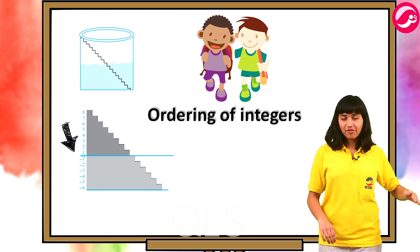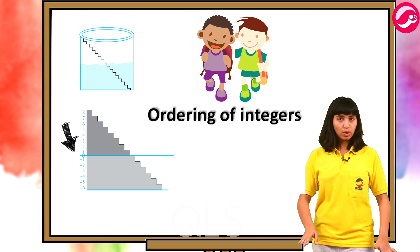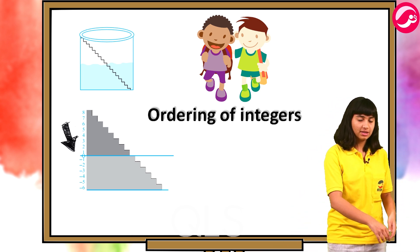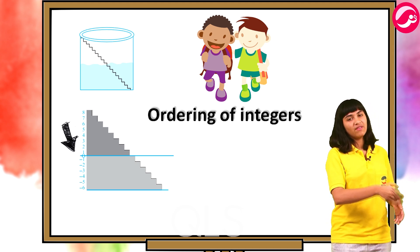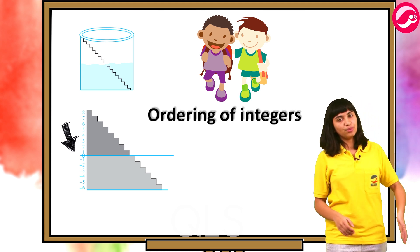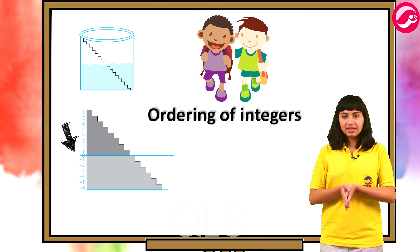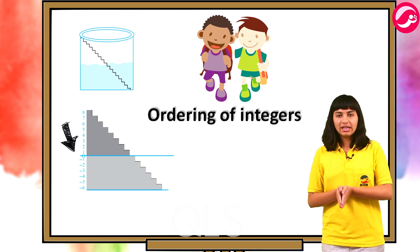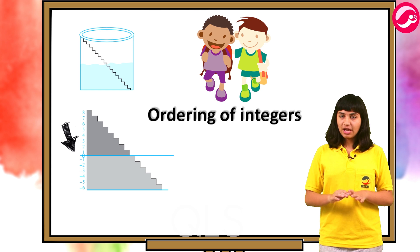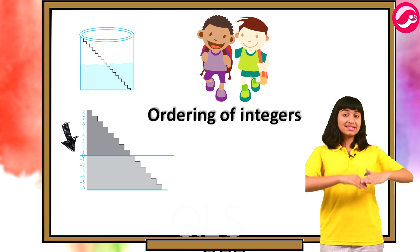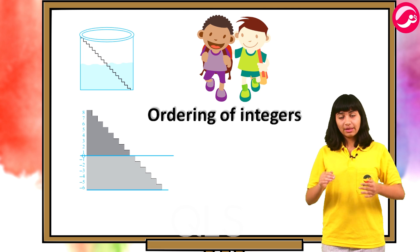They marked zero at the existing water level and marked one, two, three, four each step above. Jo present water level tha uspe unhone zero mark kar diya aur upar upar ki steps pe one, two, three, four, five karke pure eight tak mark kar diya. After the rains they noted that the water level rose to the sixth step — zero se sixth step tak water level aa gaya.